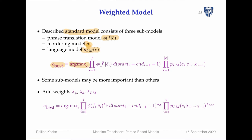You decompose over phrase pairs with a phrase translation probability, reordering, and multiply it all together. The language model explains each English word given the preceding ones, though the actual language model will cut down the history. Some sub-models are more important than others — is the language model or the translation model more important? In some cases the language model is more important to produce fluent output; in other cases it's more important that all information is preserved accurately.